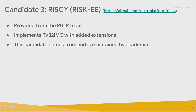Next is RI5CY from PULPino, which has gotten quite a few mentions over the past couple of days. This is provided from the PULP team and they've done a very good job with it. It implements RV32 IMC and has some added extensions. This candidate really represented what was available from academia.